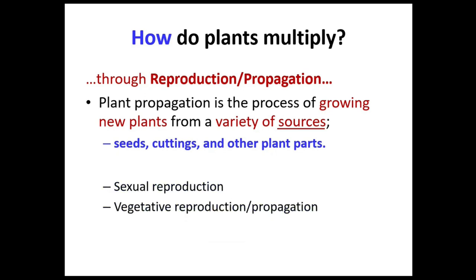There are two categories: sexual reproduction and vegetative reproduction. In sexual reproduction, pollen grains are the male reproductive structure that lodge on the stigma, which is part of the female flower. After pollination, fertilization occurs, producing fruits and seeds. In natural habitats, after seed dispersal, seeds fall to the ground and produce seedlings.